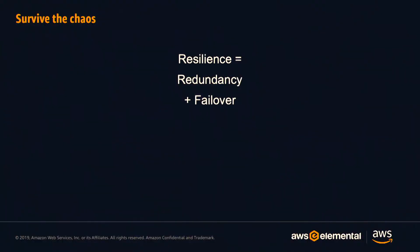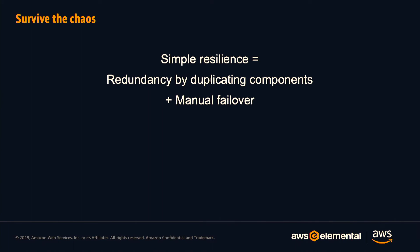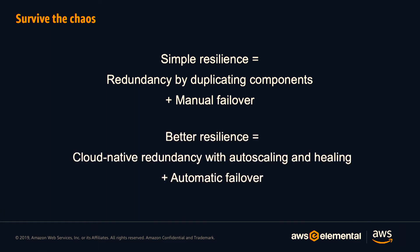The core message is that your resilience is basically built out of having redundancy and then failover between that redundancy. The simple form of that is just having a duplicate of what you're building and manually switching between A and B. But what the cloud enables is a better form of resilience — a cloud-native architecture that utilizes auto-scaling and the self-healing possible with auto-scaling groups, with the goal of making as much of that failure recovery automatic as possible.